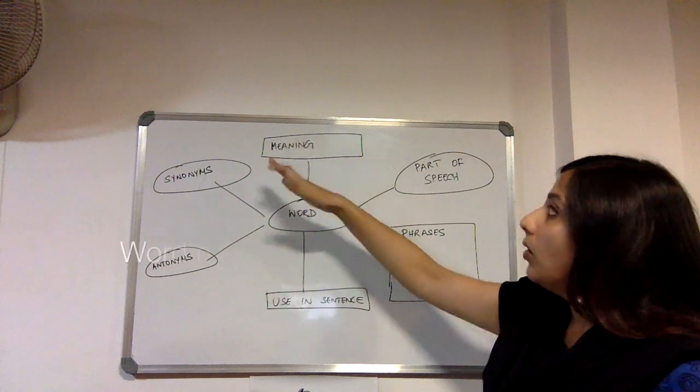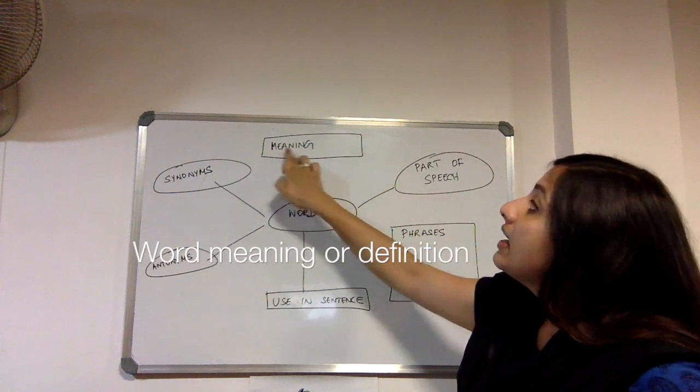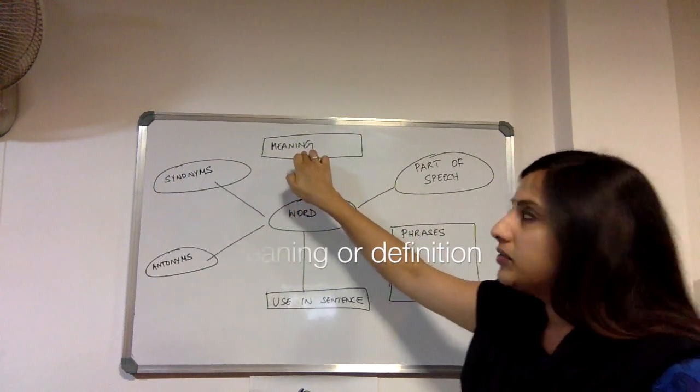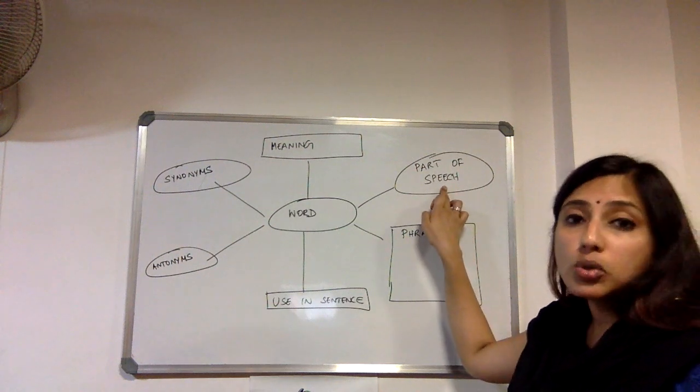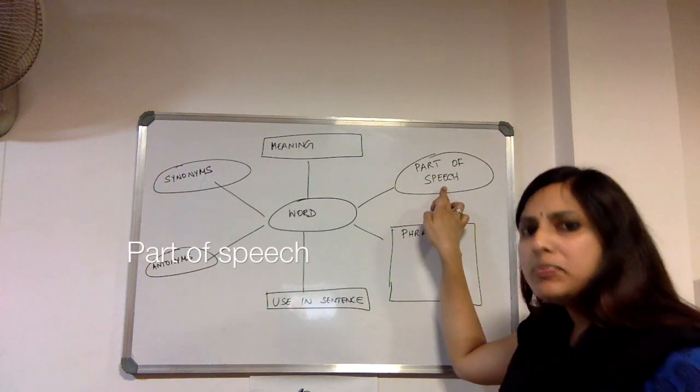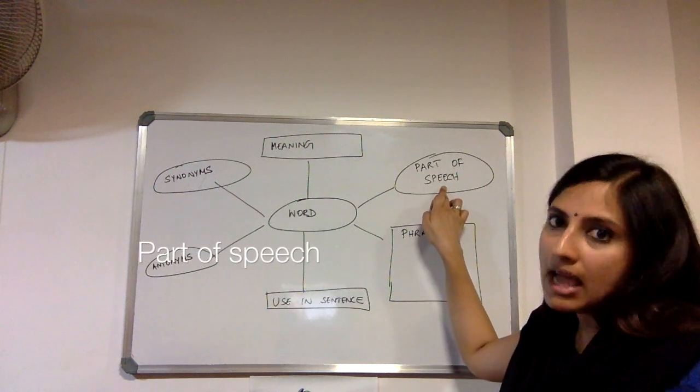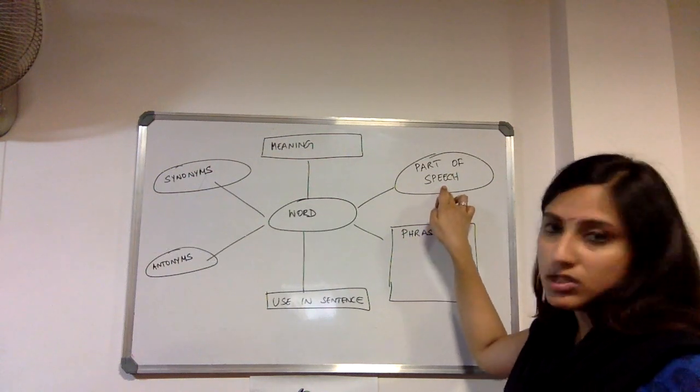The circle on top, or whatever shape you can give it, is for the meaning or the definition of the word. The next one shows the part of speech. What part of speech does the target word belong to? Is it a noun? Is it a verb? Is it an adjective? And so on.